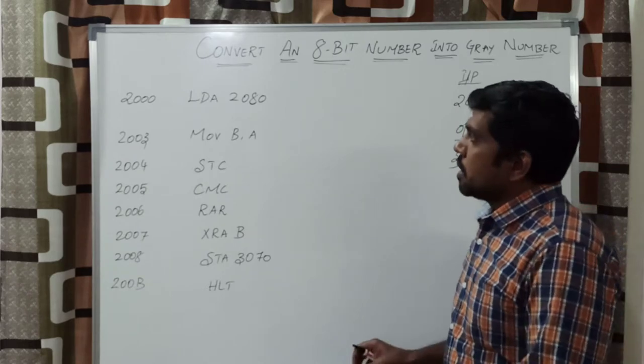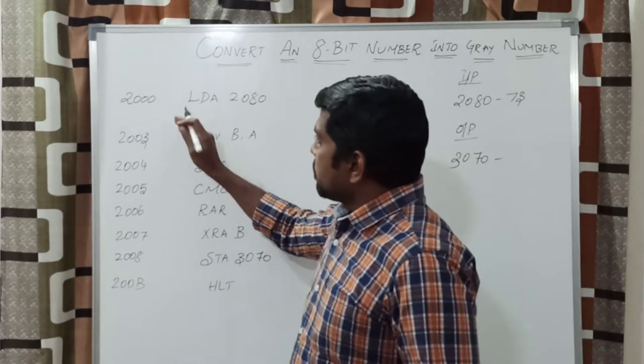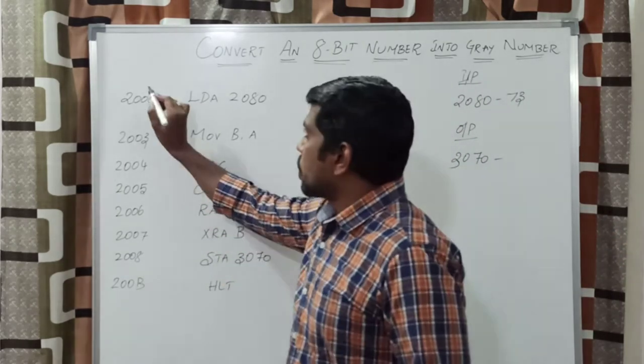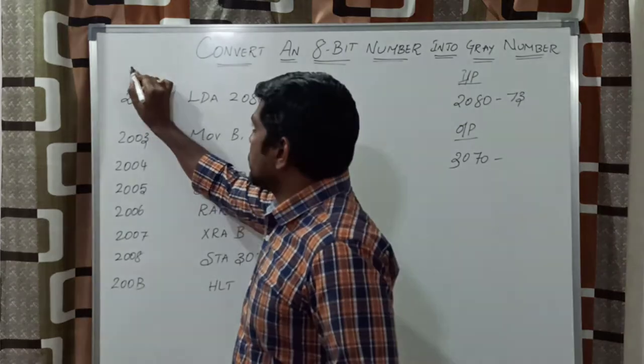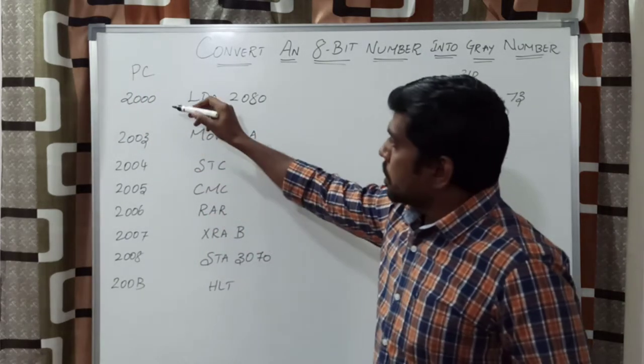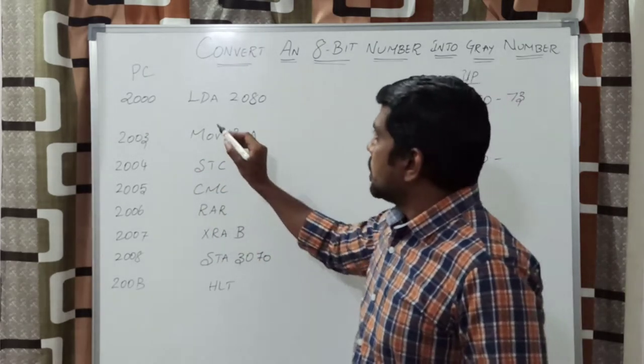In this program, we make it as two columns. The first column represents the program counter. The program counter mentions the address location.